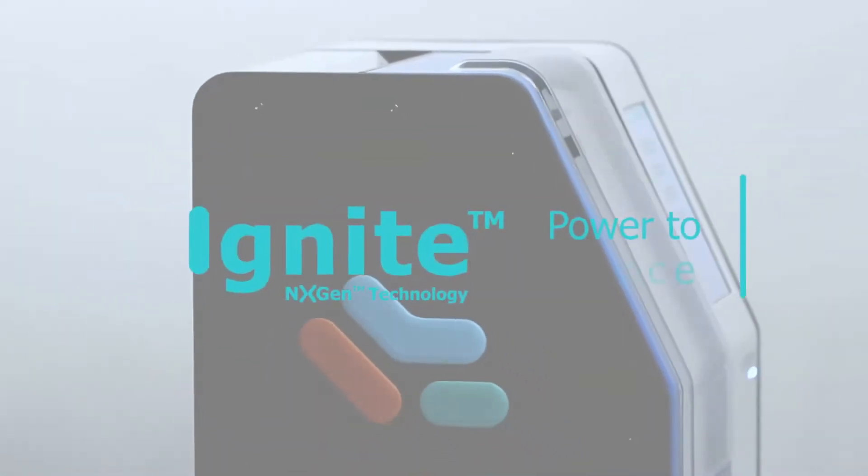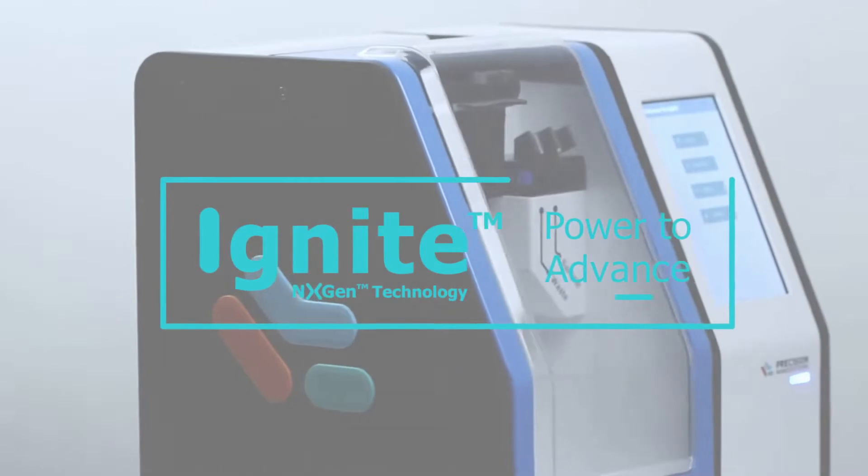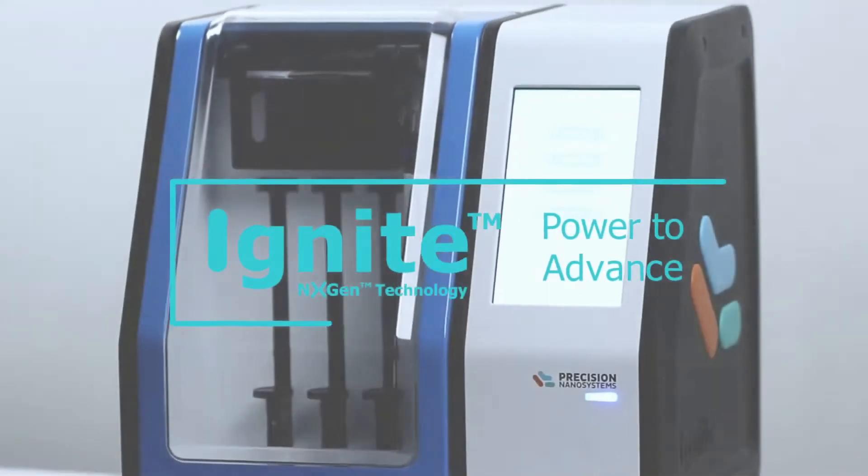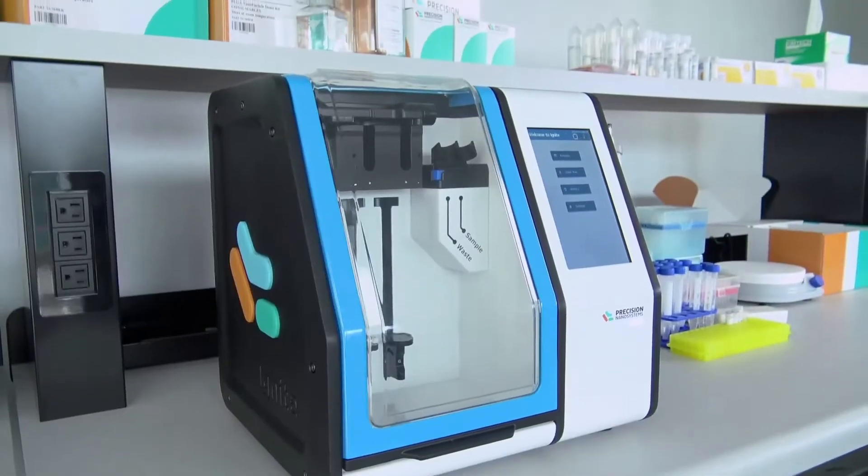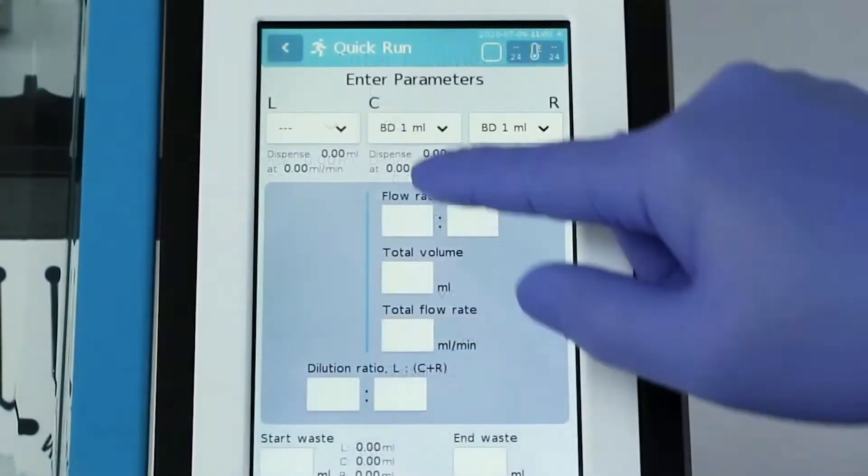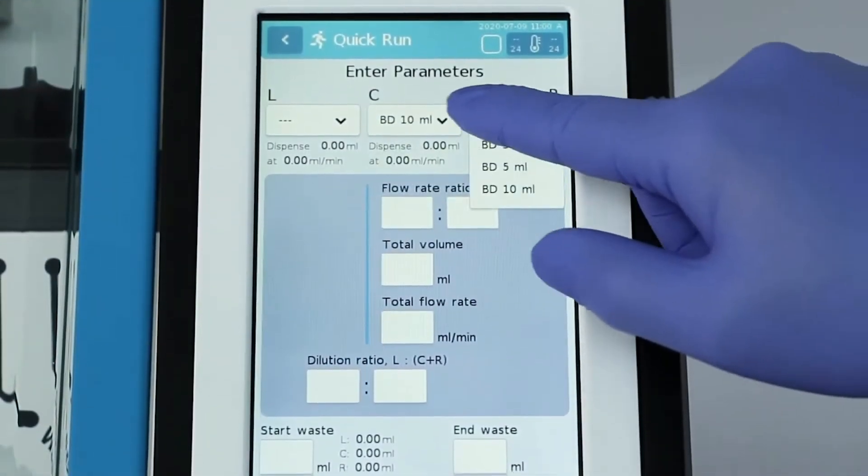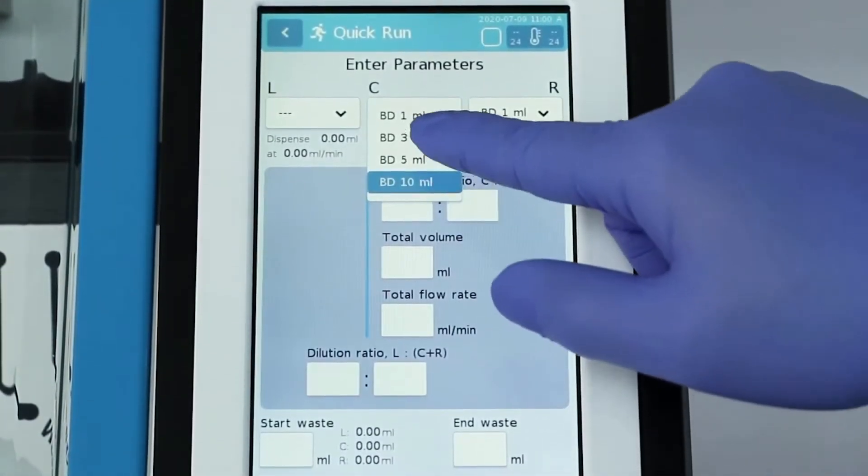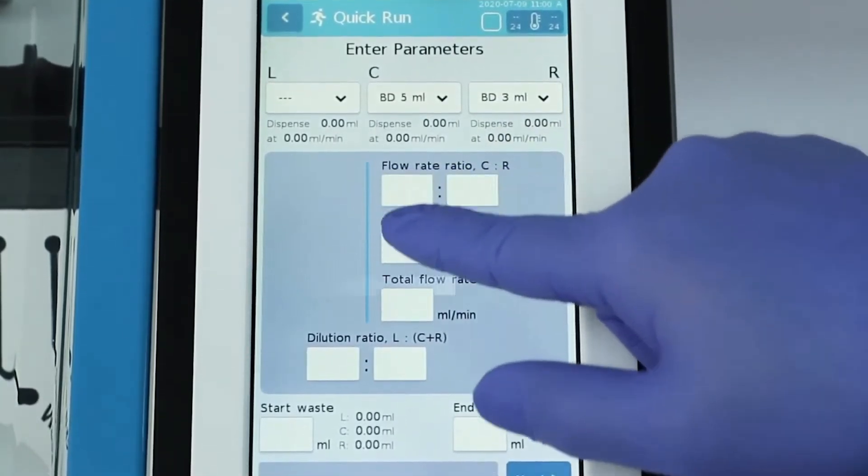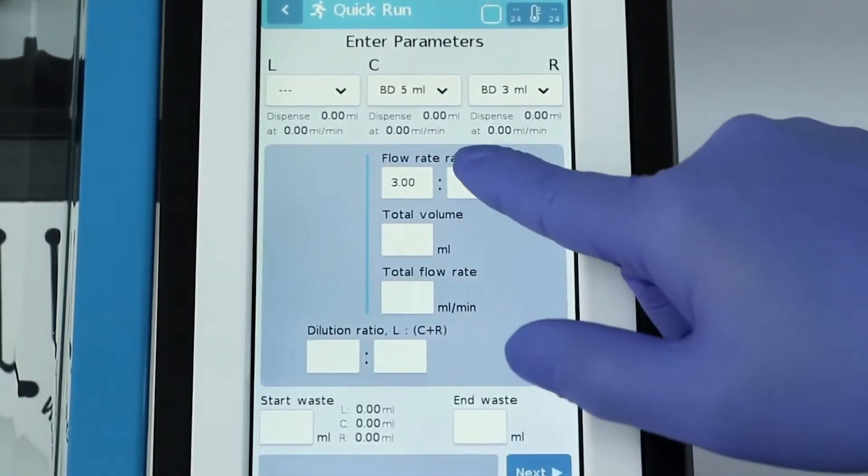For increased volumes, the physics of one mixer can be parallelized to scale output seamlessly from milliliters to full GMP manufacture at tens or hundreds of liters while maintaining identical manufacturing parameters. The Nano Assembler Ignite is a powerful tool for advancing your nanomedicine development.